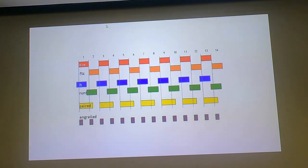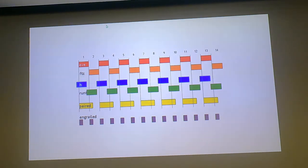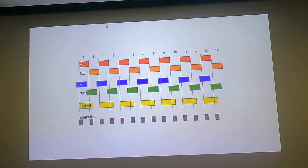Another cute thing about this diagram: this little space here—how wide is that in the embryo? It's exactly one cell wide. When you look at the segments of the early embryo, each segment is roughly four cells wide. The offset of these pair rule genes means that each cell in the segment has a unique combinatorial code. This part is getting kind of elegant—that's neat to see, but again it makes the regulation of these genes look pretty complicated.